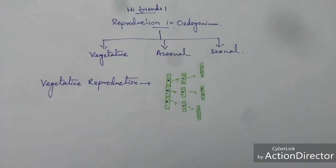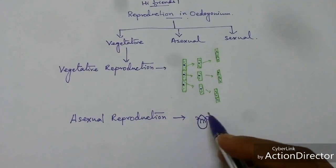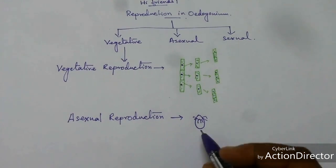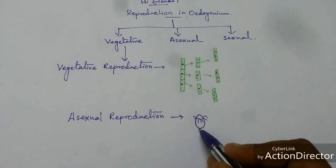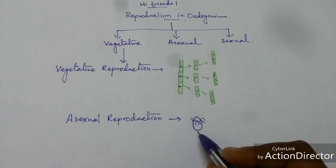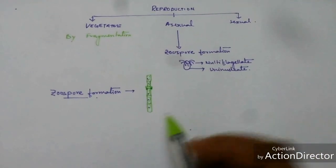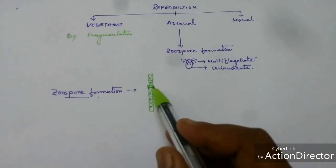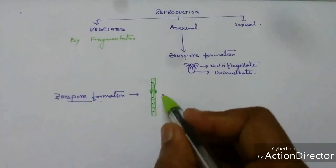Now in case of asexual reproduction, zoospores are formed. Zoospores are multiflagellated and uninucleate structures. Zoospore formation occurs by the help of the capsule.